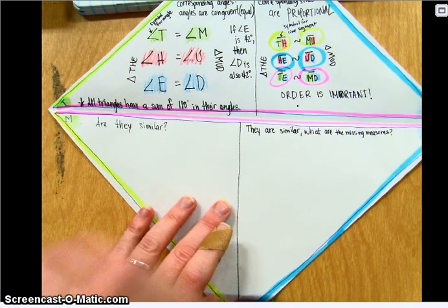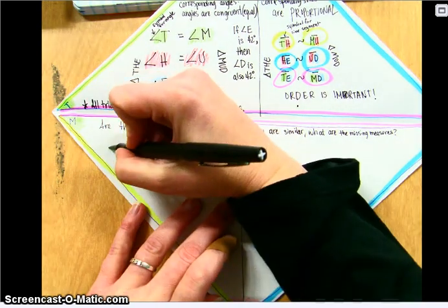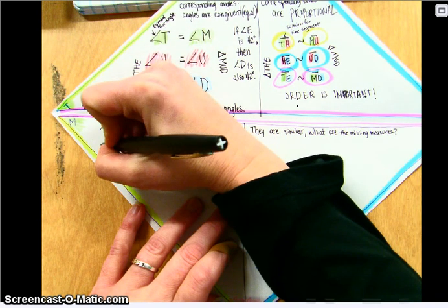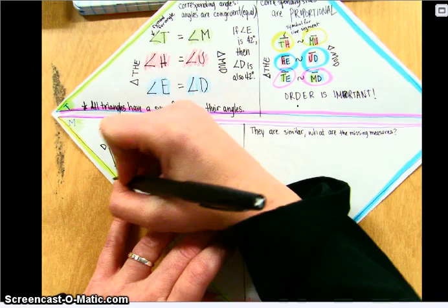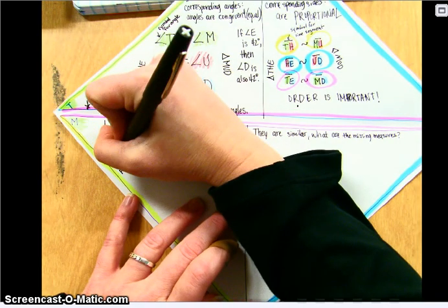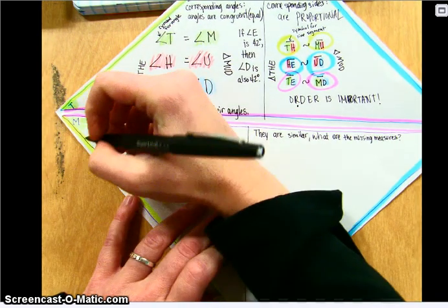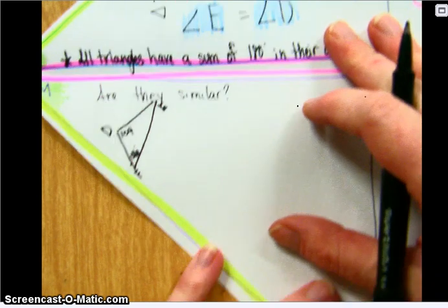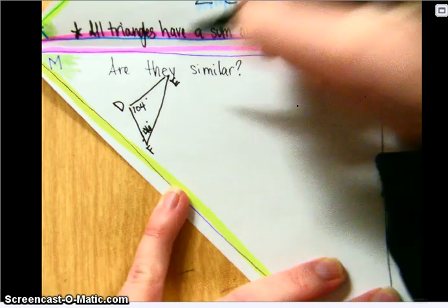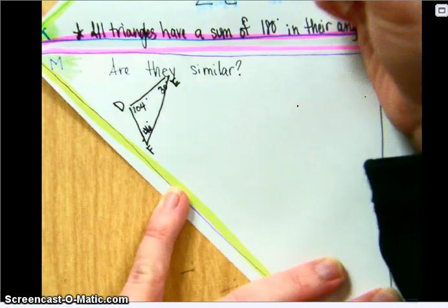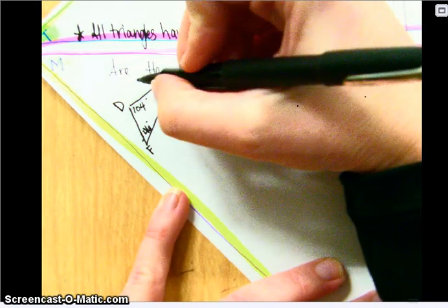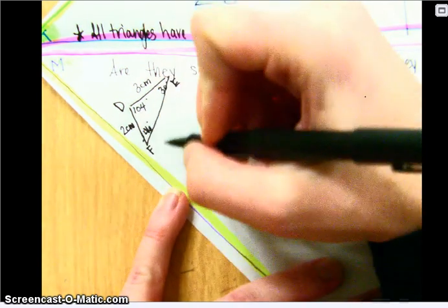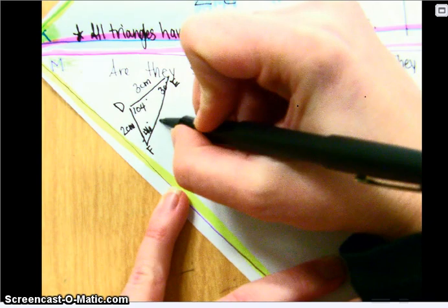So for this first type of are they similar, we're going to have to draw ourselves two triangles. And this is triangle D, E, F, and angle F is 46 degrees. Angle D is 104 degrees and then angle E is 30 degrees. The measure of DE is 3 centimeters, the measure of DF is 2 centimeters, and the measure of FE is 4 centimeters.